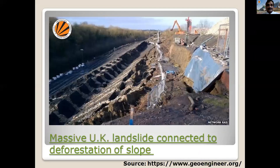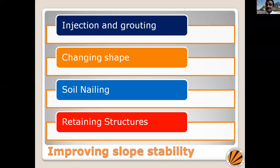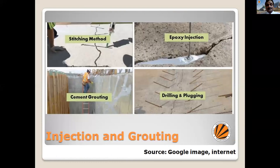Let us see, one by one, some of the issues. This particular slide explains massive UK landslides connected to the deforestation of a road. Because of this, a lot of natural resources are wasted. So what can be done as a geotechnical or geo-environmental engineer — like doing injection, grouting, changing the shape, putting soil layers, or providing retaining structures — these are all a combination of geotechnical and geo-environmental solutions. When you inject something in the ground, you also have to see the geo-environmental aspects, and by this you actually improve stability and ensure natural resources are not wasted.